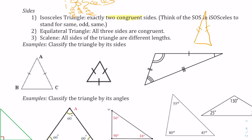Then you have equilateral, where all three sides are congruent. Remember, tick marks mean that they are the same measurement. And then scalene is where all of the sides are different — you can note they're all different because one side has one tick mark, another has two, and the third has three.